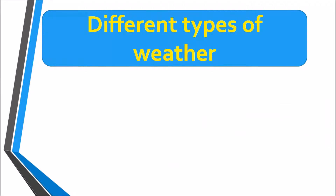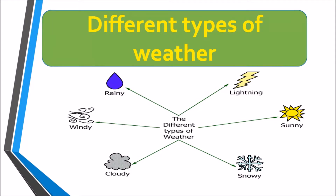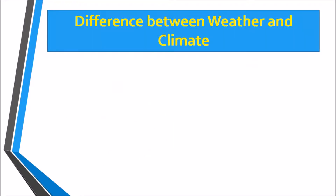Different types of weather include lightning, sunny, snowy, cloudy, windy, and rainy. Now, what are the differences between weather and climate?